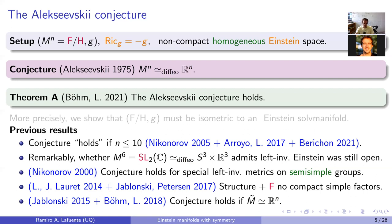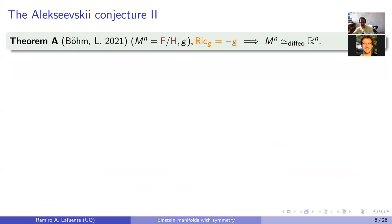From these structure results, Chablonski and Petersen proved that the transitive group F can be assumed to have no compact simple factors. Another non-trivial result due to Mike Chablonski in a 2015 Duke paper and joint work with Christoph is that the conjecture holds if the universal cover is diffeomorphic to R^n — essentially one can assume M is simply connected.